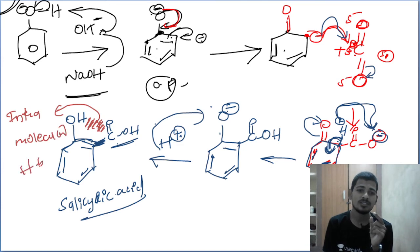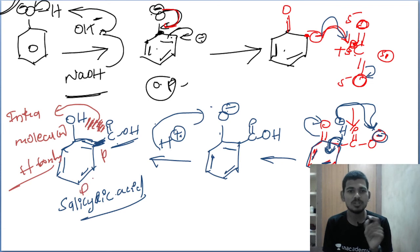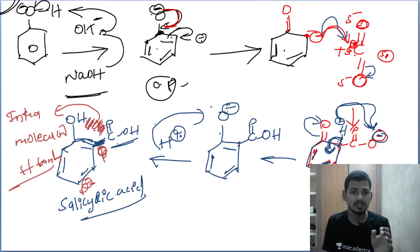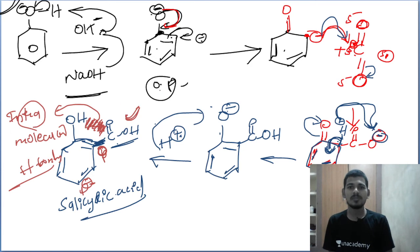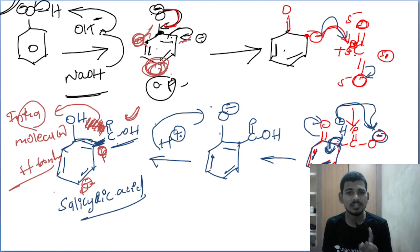Intramolecular hydrogen bonding is very very important. The complex is stable because of hydrogen bonding, and that is why the compound forms at the ortho position. Did you understand? This is the simple mechanism of the Kolbe-Schmitt reaction.